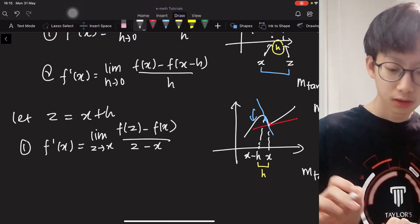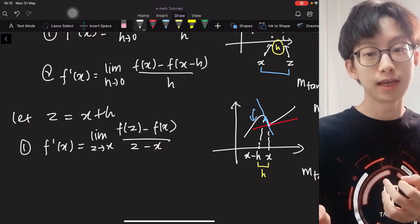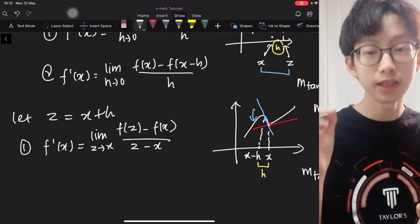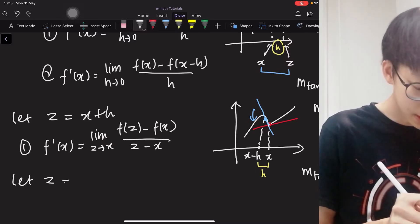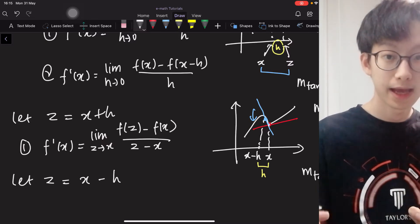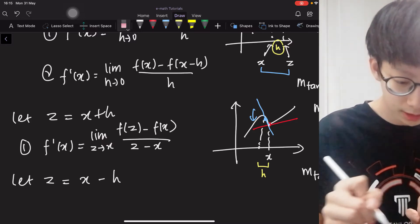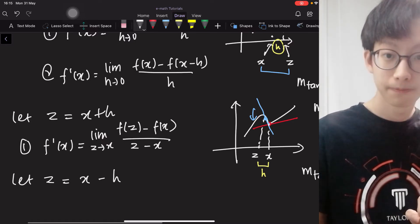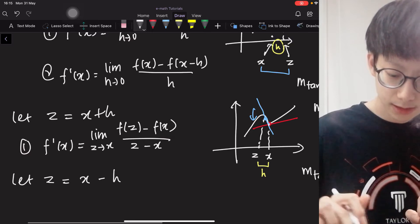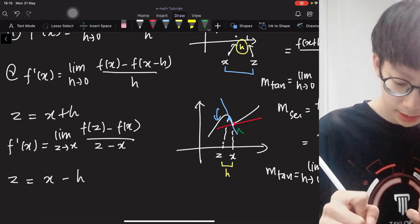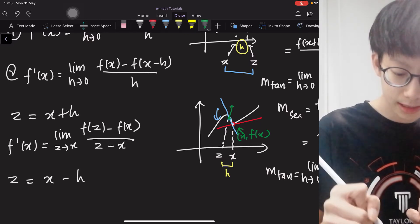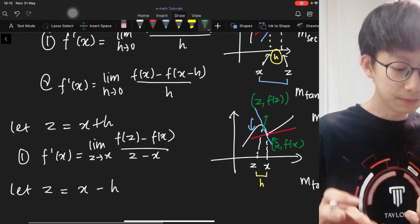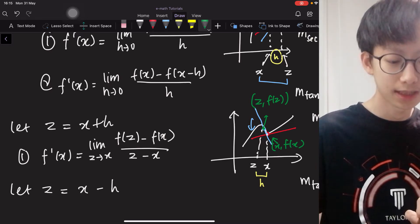Then what about the second one? So as you can see, because we are choosing a point on the left of our point, so we will let our z be x minus h this time, which means this is no longer x minus h, it is z. And this point here, this point here is still (x, f(x)), and this point here is now (z, f(z)).